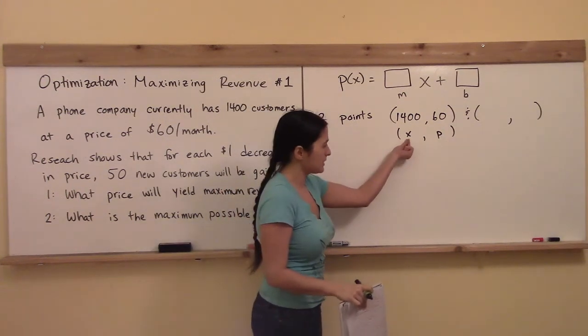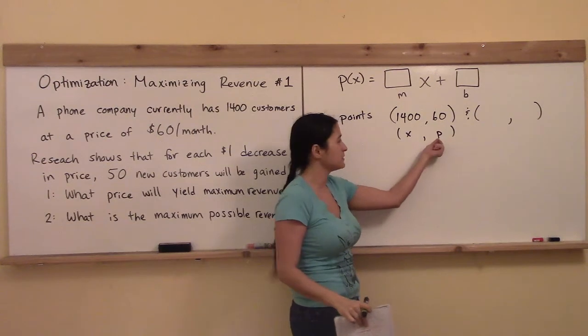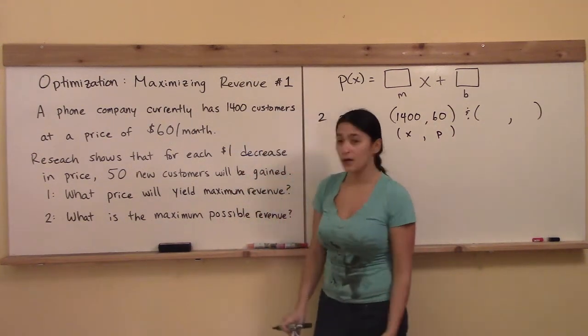You have to make sure that you keep the x in the x position and the P in this case in the second position there. So the first point is 1,400 comma 60. All right,